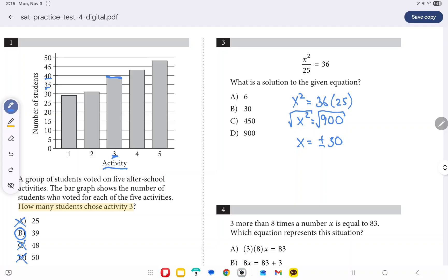How do I know that that's the correct answer? Well, if I take 30, I multiply it by 30, that's going to give me 900. If I also take negative 30 and multiply it by negative 30, that's also going to give me positive 900.